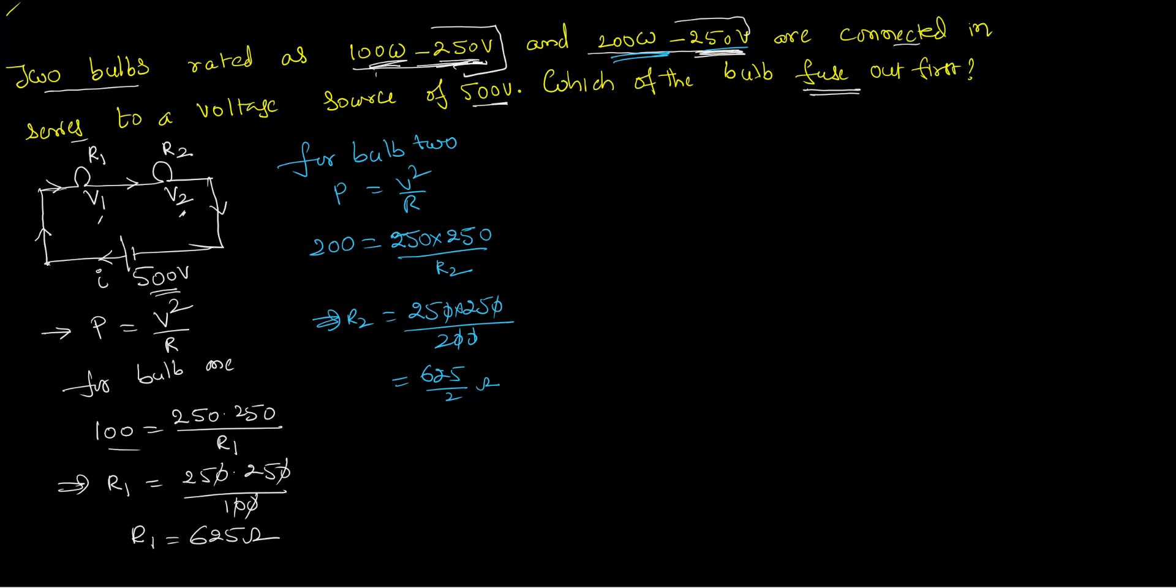Well, I got the second resistance 625 by 2. Now I know the value of R1. I know the value of R2. Once I know the resistances, it is very clear both of them are connected in series. This resistance R1 and R2 are in series. I know the formula for R series as R1 plus R2.